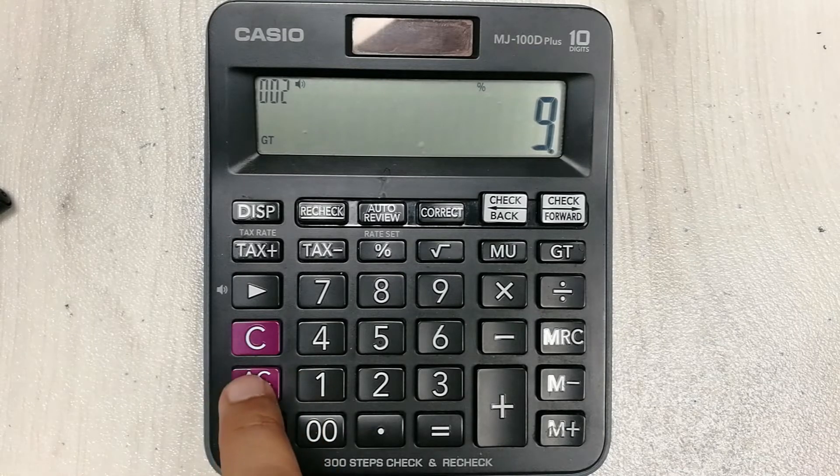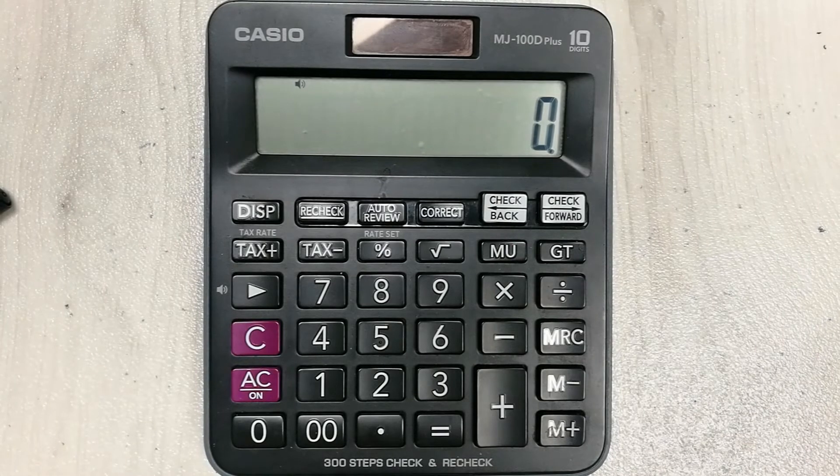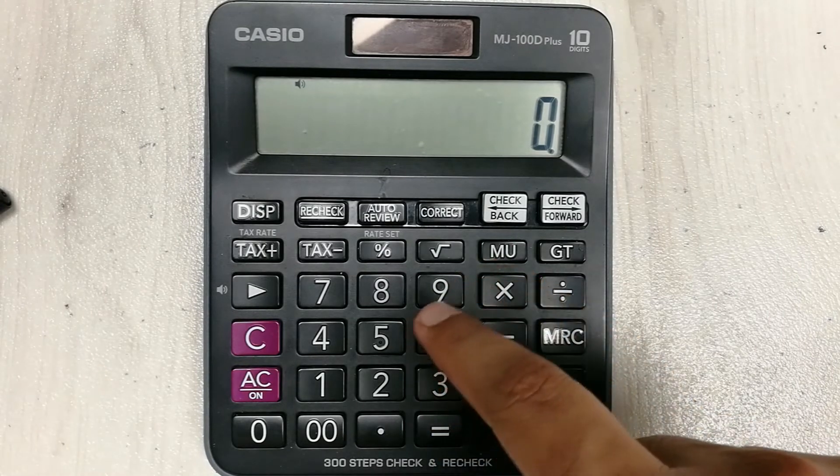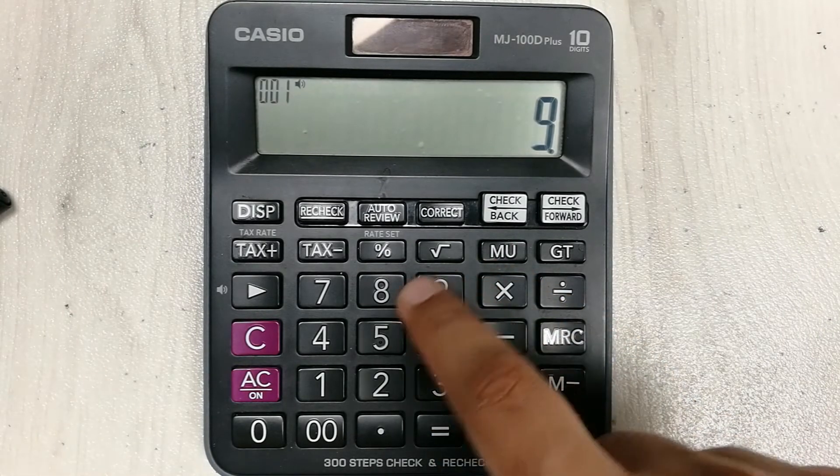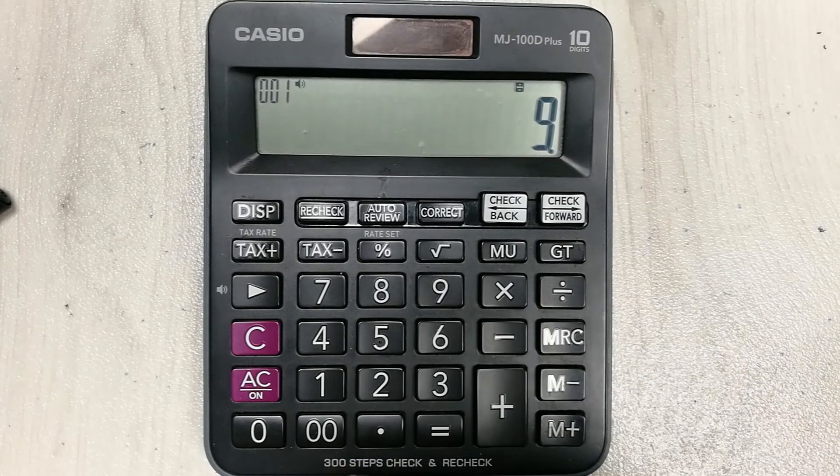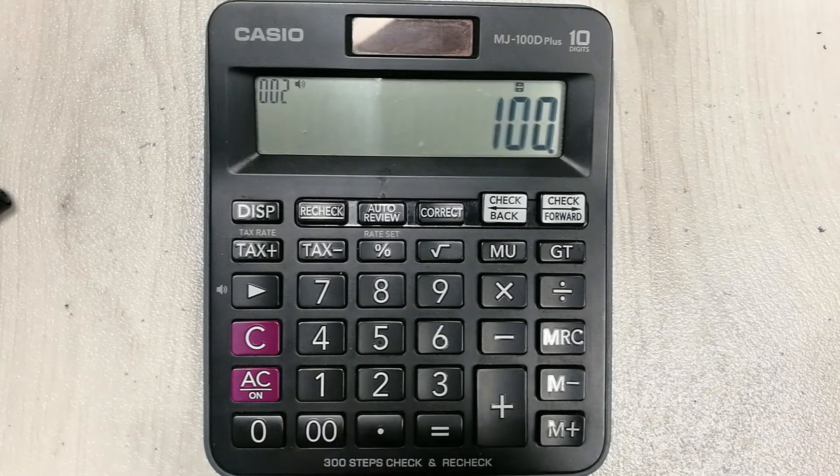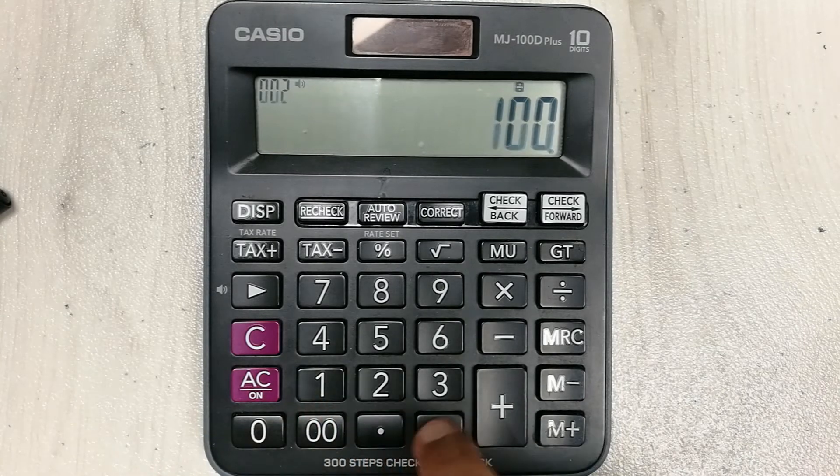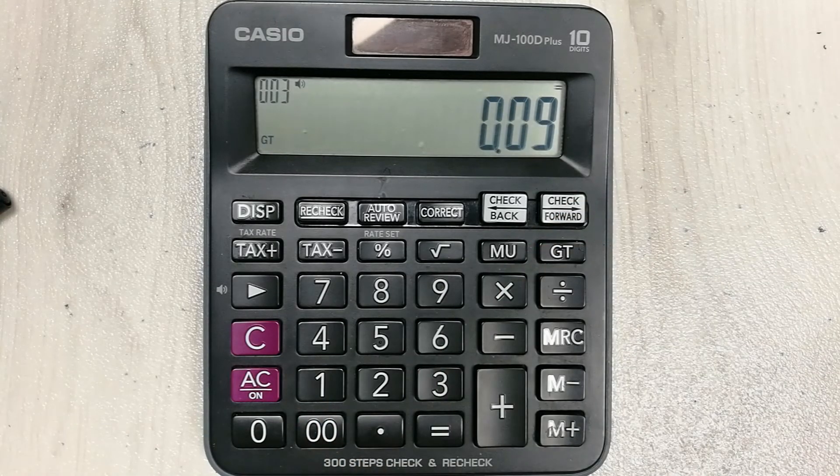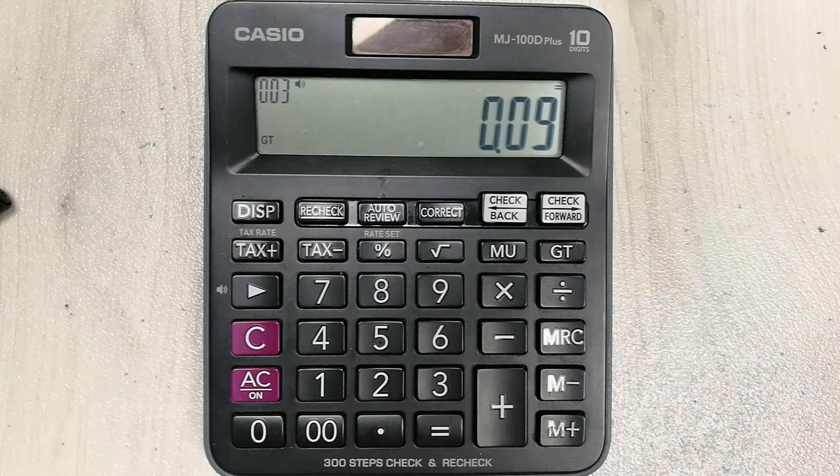I press this AC on button to make everything clear. What I will do is divide this nine, so nine, then I press divide and I divide it with 100. So 9 divided by 100, and then I press this equal button.